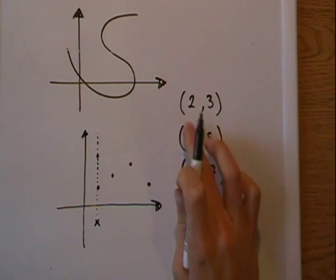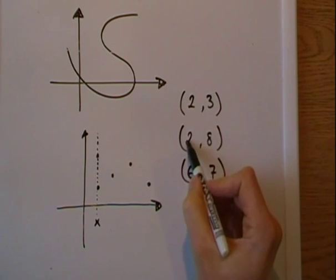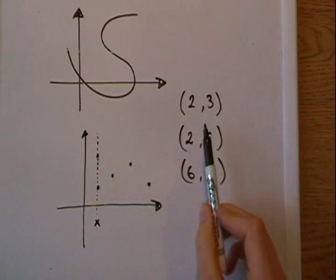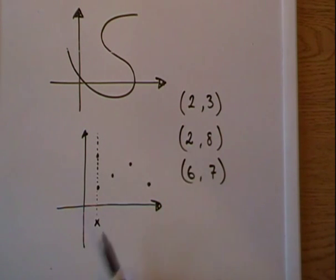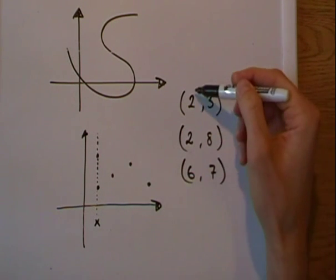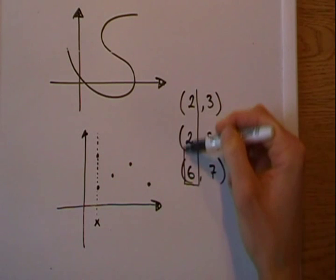On the other hand, if I would have changed this 4 into a 2, for instance, all of a sudden we would have had two points on the same vertical line, which determines that it's not a function. So just make sure that the x values are all different.